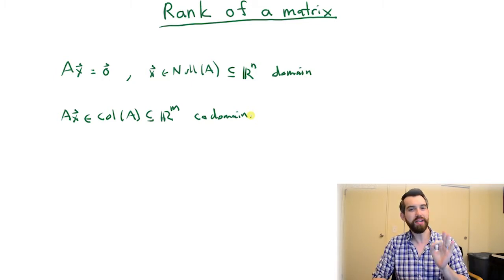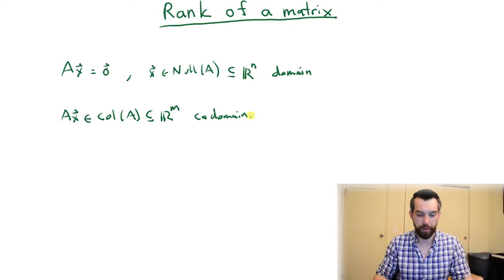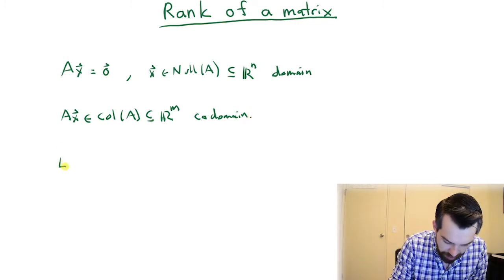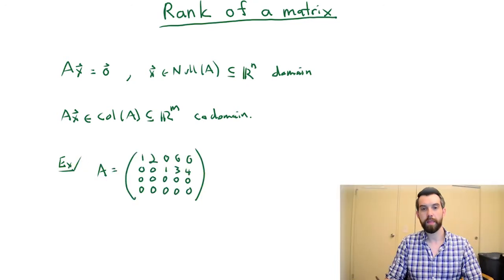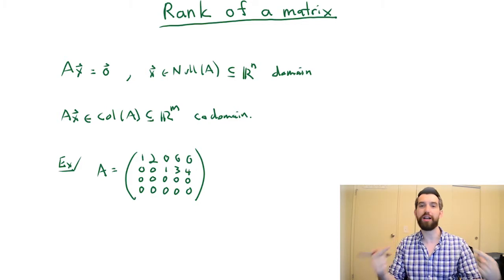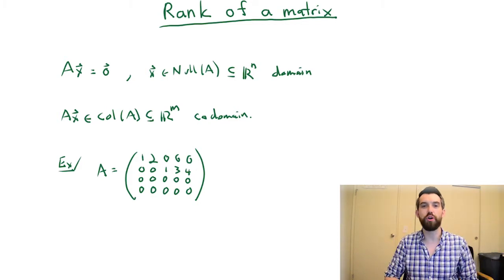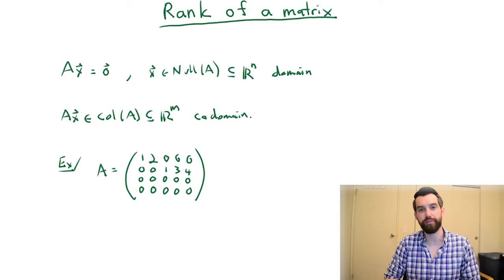I want to give a specific example of a matrix, just so we have something concrete to talk about. This matrix I've already put in the reduced row echelon form, but if it wasn't in the reduced row echelon form, we could put it into RREF. We wouldn't change any solutions to it.